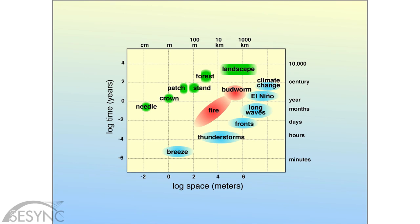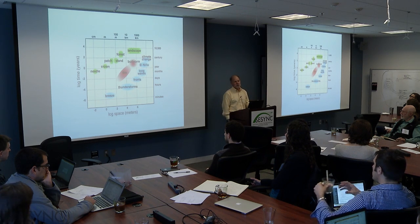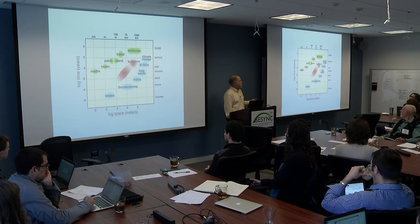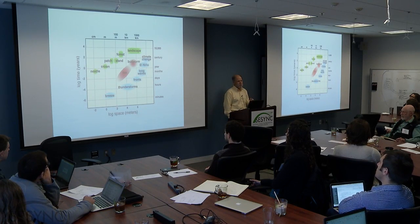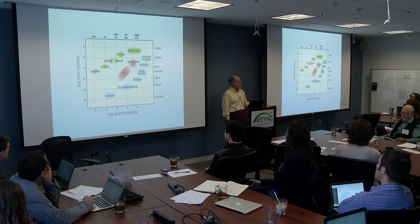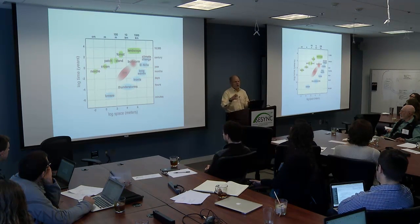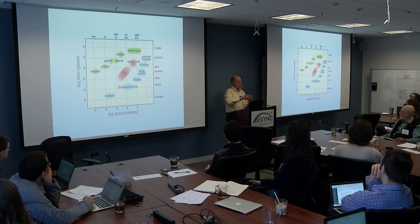Of course, ecosystems are also organized hierarchically in space and time. This is a plot of the log of the space of a process versus the log of its turnover time in years — called a Stommel diagram, after the oceanographer Henry Stommel, who introduced these in the 1930s to think about turbulence and pattern in the ocean. Since then they've become fairly popular in ecology, and it's easy in ecological textbooks to find lots of diagrams showing that systems are organized hierarchically in space and time.